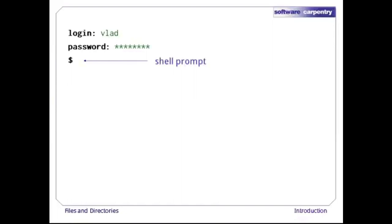Once we have logged in, we'll see a shell prompt, which is usually just a dollar sign, but which may show extra information like our user ID. The shell prompt is exactly like Python's triple greater-than prompt. It signals that the shell is waiting for us to type something in.